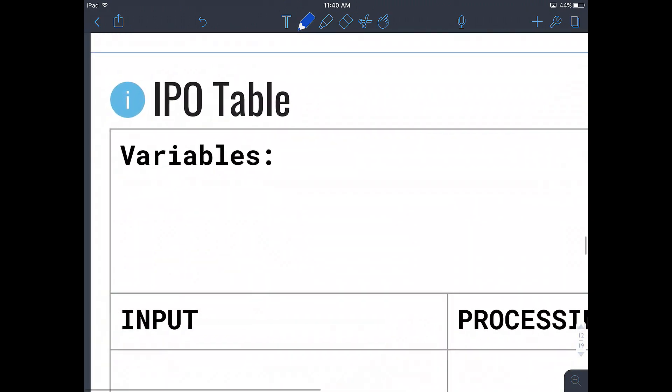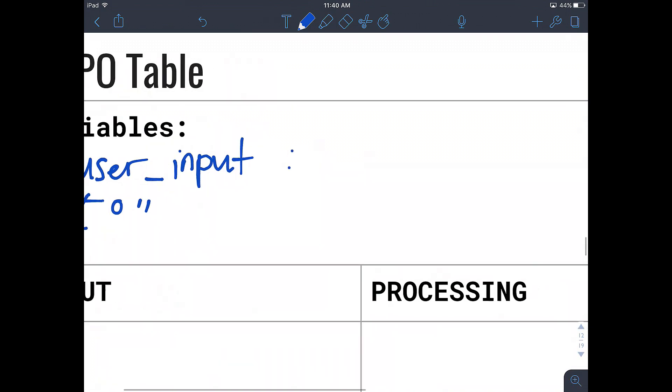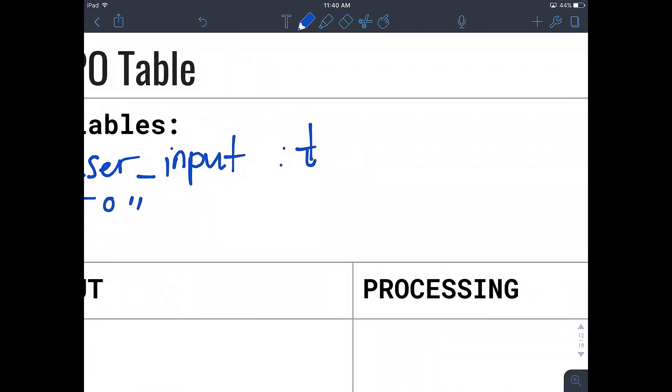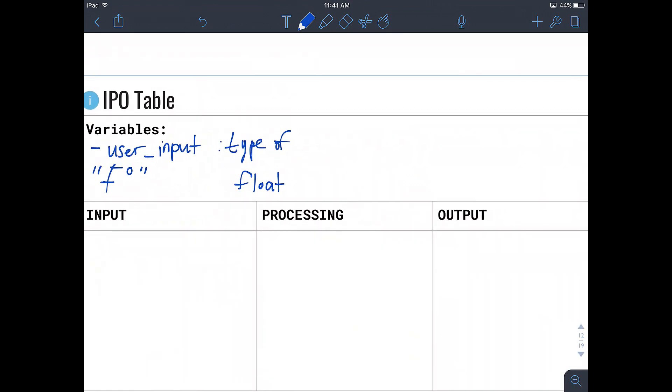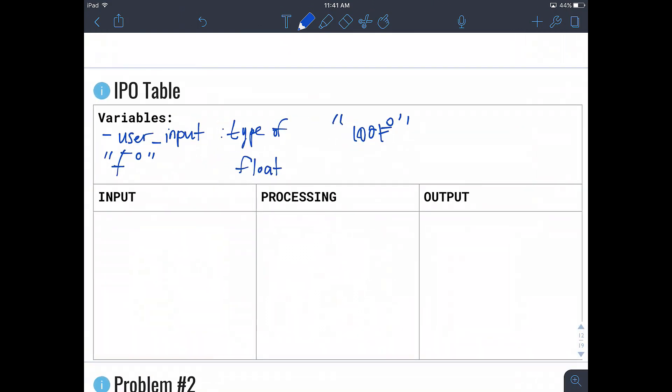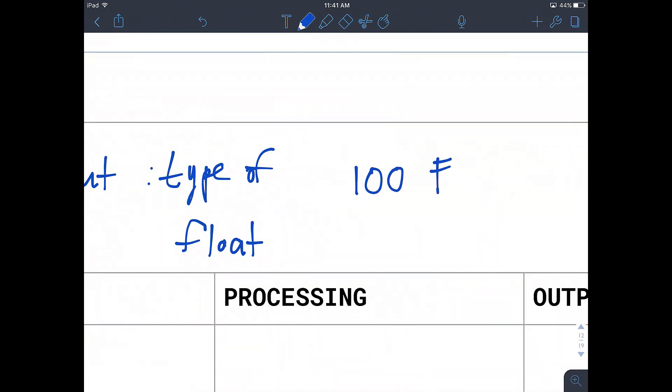So for a given problem, some of the variables that we might need can be called the user input, which is for our Fahrenheit degrees, where this data type will be a type of float. So type of float. Let's fix our T. And we usually can have values like 100 Fahrenheit.